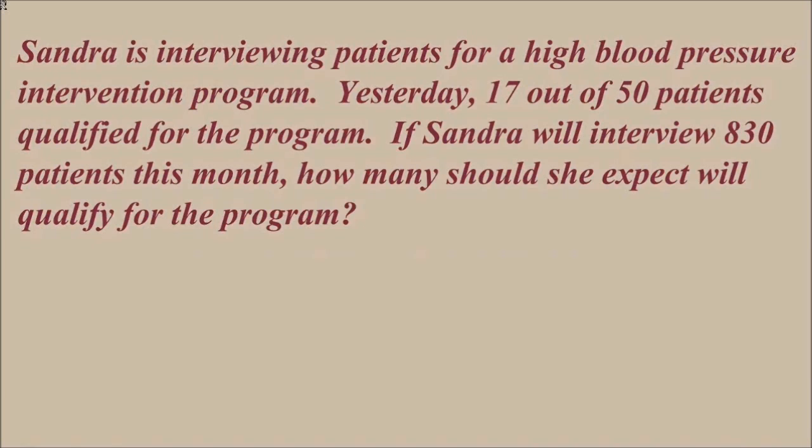When we set up the proportion, we're looking for two situations that have similar quantities in each situation. In this case, we have the small scale which would be in one day 17 out of 50 patients qualified, and then we have in the larger scale that we have a total of 830 patients and we're interested in how many from that group will qualify.